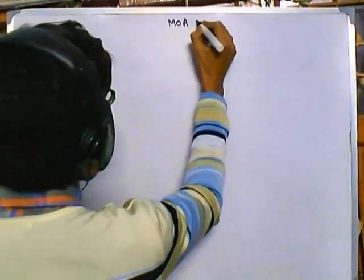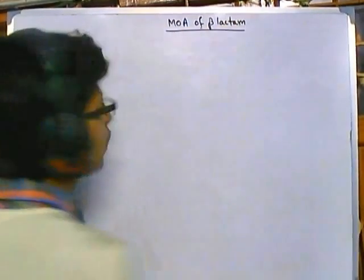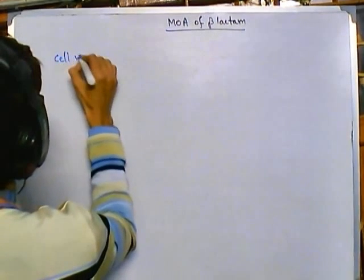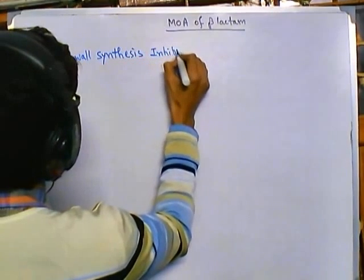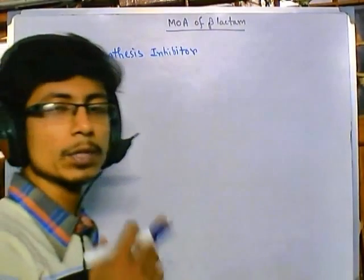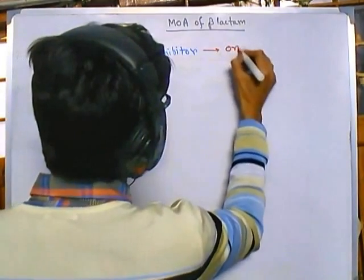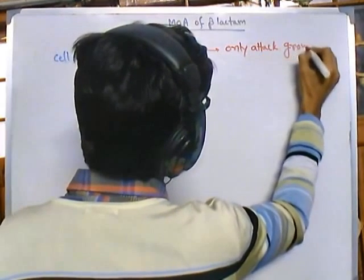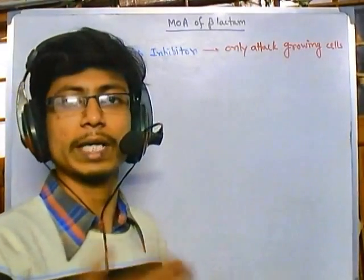Here we'll be talking about the mode of action of beta-lactam antibiotics. The most common one is penicillin. All of them are cell wall synthesis inhibitors, meaning they interfere with the production or synthesis of the cell wall. As a result, they can only attack growing cells — those bacterial cells which are developing, growing, and dividing.